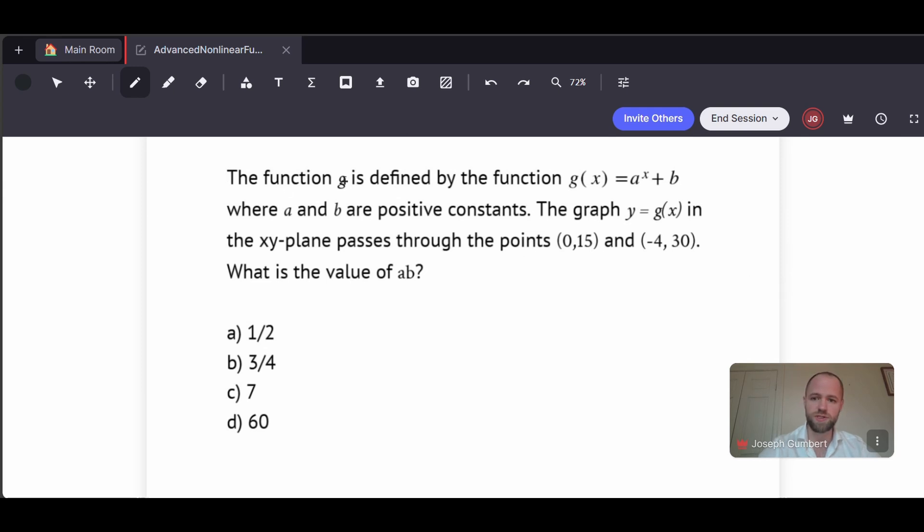So this question reads: the function g is defined by the function g(x) = a^x + b, where a and b are positive constants. The graph of y = g(x) in the xy plane passes through the points (0,15) and (-4,30). What is the value of a times b?